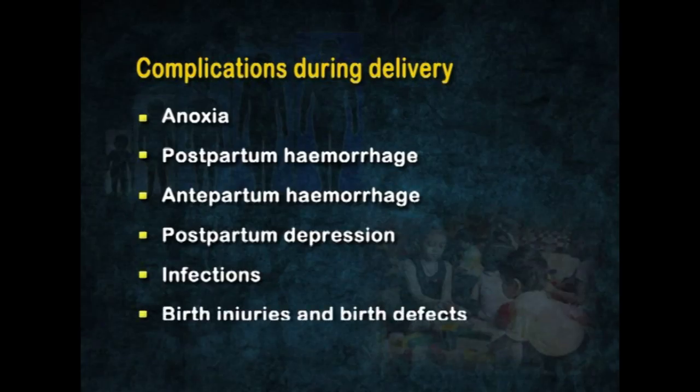Birth injuries and birth defects are also complications. Head injuries may occur due to prolonged or difficult delivery. Injury to nerves branching from the spinal cord may cause paralysis of the arms and legs. Birth defects, or congenital defects, are abnormalities present at birth and may be inherited from parents or due to illness or toxic conditions in the uterus or birth passage. Common birth defects include mongolism, cleft palate, color blindness, hemophilia, and congenital heart disease. Cerebral palsy and mental retardation may also occur due to oxygen deprivation, detachment of the placenta, or twisting of the umbilical cord.